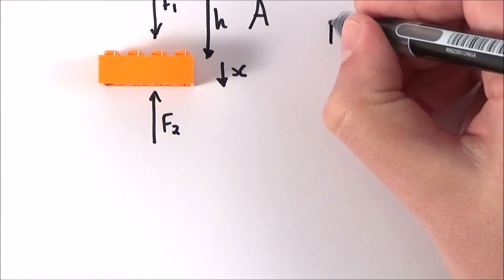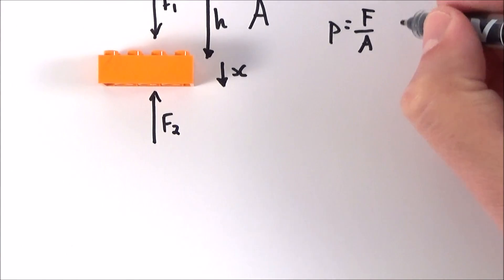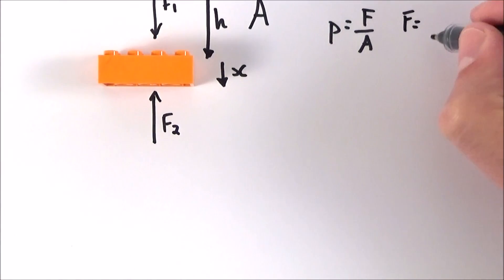Now we know that the pressure is equal to the force per unit area, and therefore if you want to know the force, it's equal to the pressure due to that fluid multiplied by the cross-sectional area.